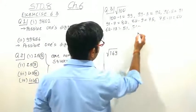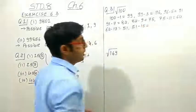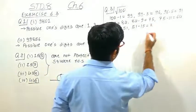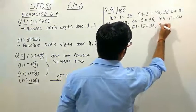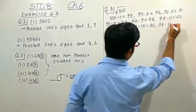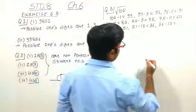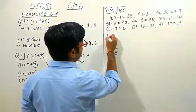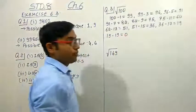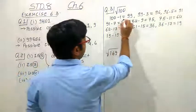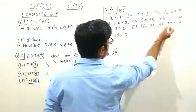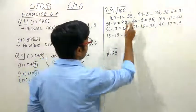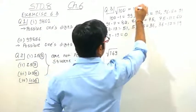Continuing: 36 minus 17 equals 19 (step 9). Then 19 minus 19 equals 0 (step 10). We reach 0 after 10 steps. So the square root of 100 is 10. This is how we use the repeated subtraction method.